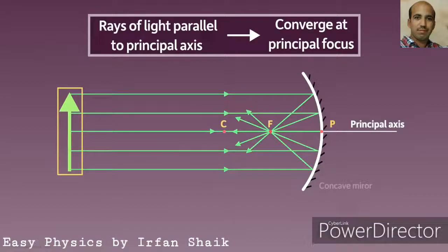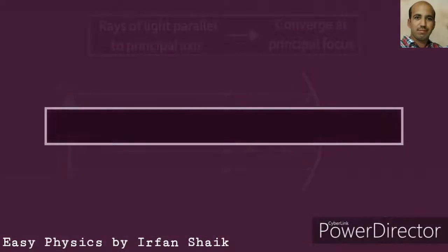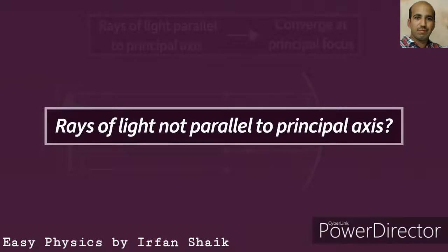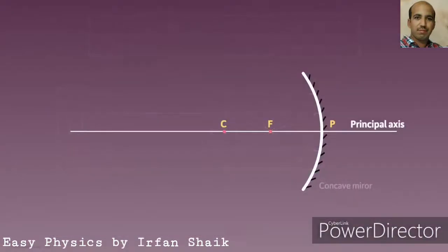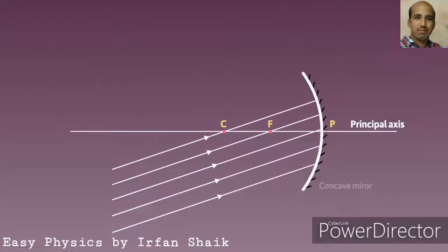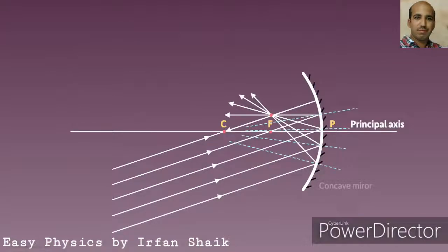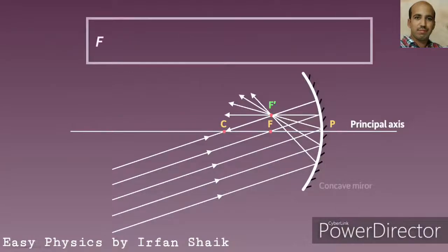Now let us learn what happens when parallel rays of light fall on a mirror making some angle with the principal axis. Observe these light rays — they are parallel to each other but not to the principal axis. These rays are reflected obeying the laws of reflection. If you observe carefully, all these light rays converge at a point just above the principal focus, but it is not the principal focus. We define the focus as the point where all rays parallel to the principal axis converge after reflection.